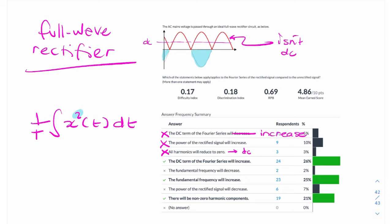The next option, the DC term will increase. So we've already established that the DC term will increase because initially the DC term was zero because it's symmetric. And now the DC term or A0 will increase. So that's true.